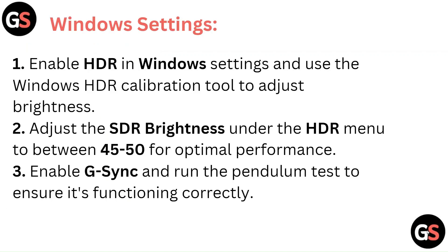Windows Settings: Enable HDR in Windows settings and use the Windows HDR calibration tool to adjust brightness. Adjust the HDR brightness under the HDR menu to between 45 to 50 for optimal performance. Enable G-Sync and run the Pendulum Test to ensure it's functioning correctly.